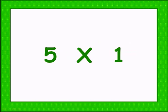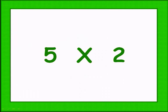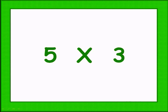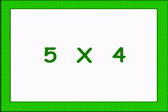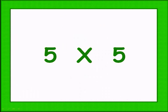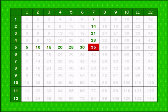5 ones are 5. 5 twos are 10. 5 times 3 is 50. 5 times 4 is 20. 5 times 5 is 25. 5 times 6 is 30. 5 times 7 is 35.